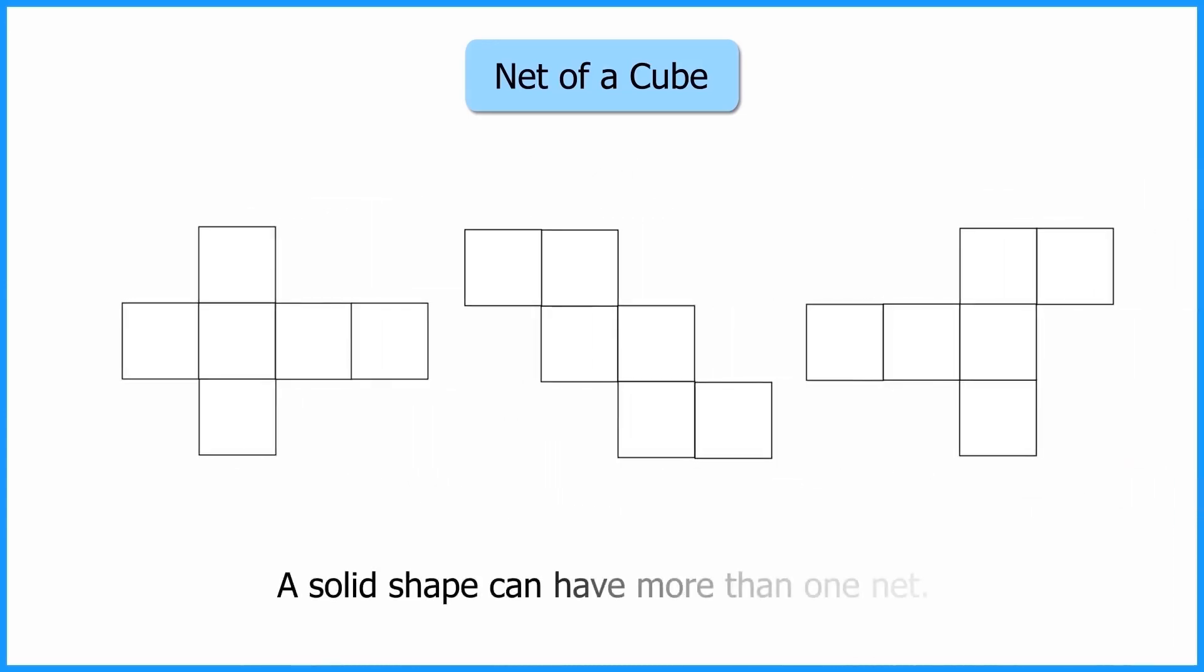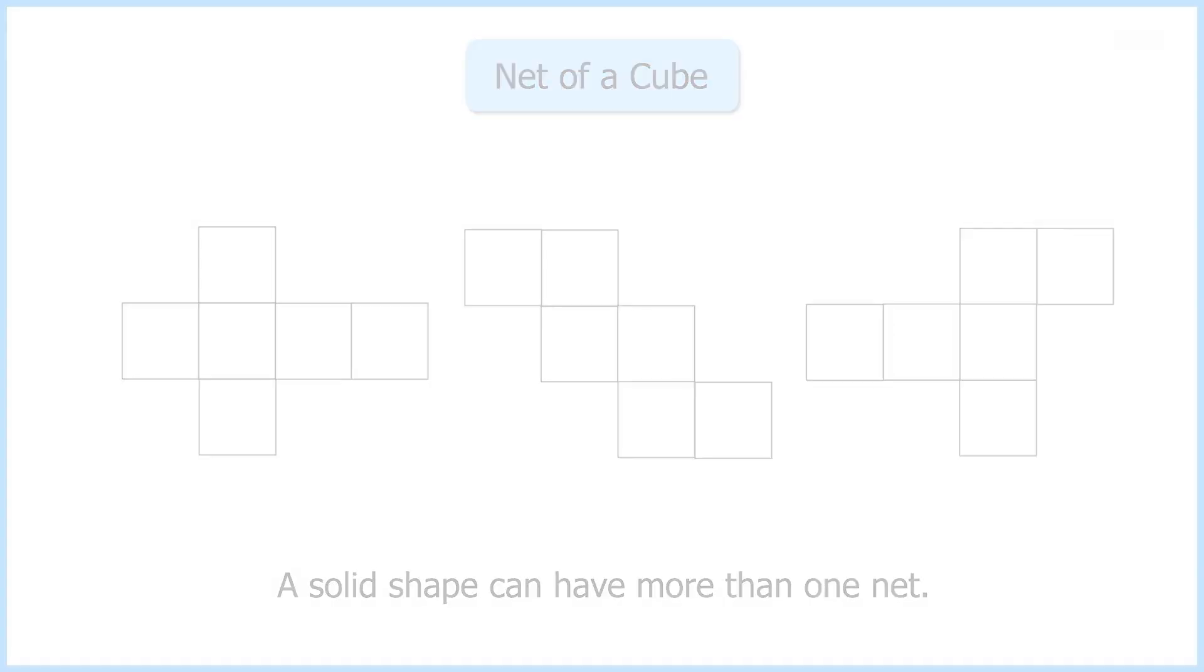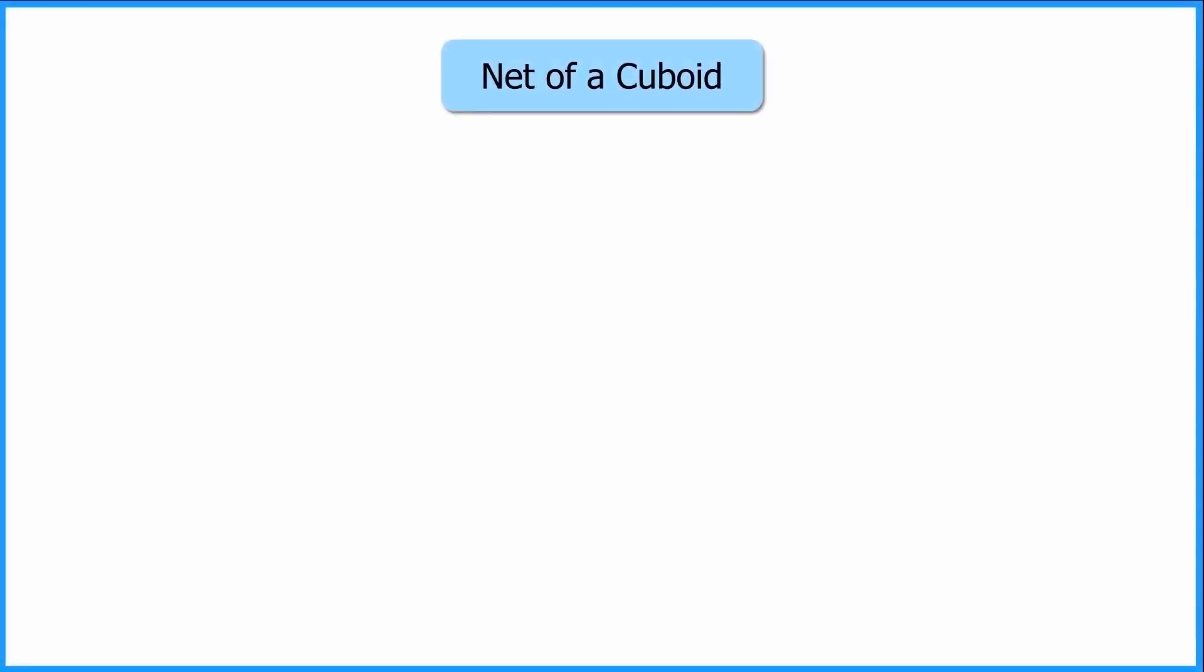Let us now unfold a cuboid to get its net. We all know that a cuboid has six rectangular faces. Now on unfolding the cuboid, its net looks like this.